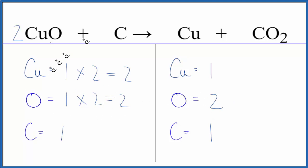So now, if we go over to the product side and we put a 2 in front of the copper, one times two, that would give us two copper atoms, and this equation is balanced.